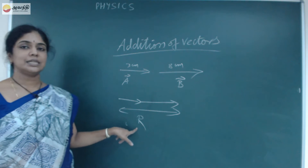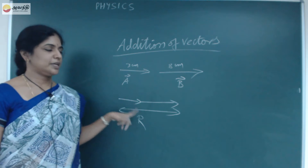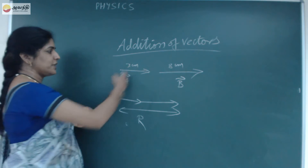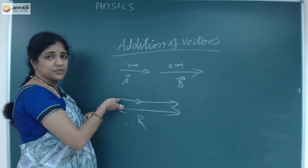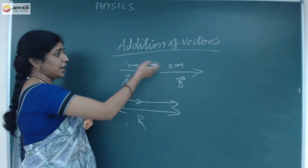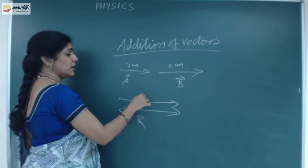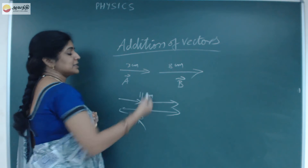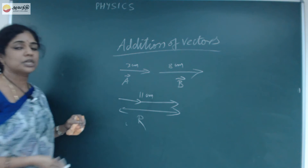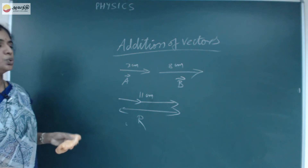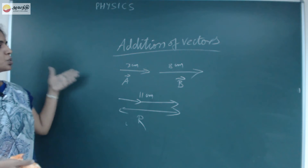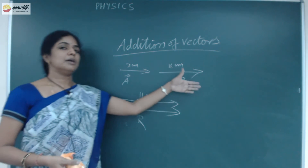That we call it as the resultant of the vectors. If I join like this, I will get the total length of these 2 vectors. So 8 plus 3 is 11 cm — this gives you the resultant of the 2 vectors in that direction.